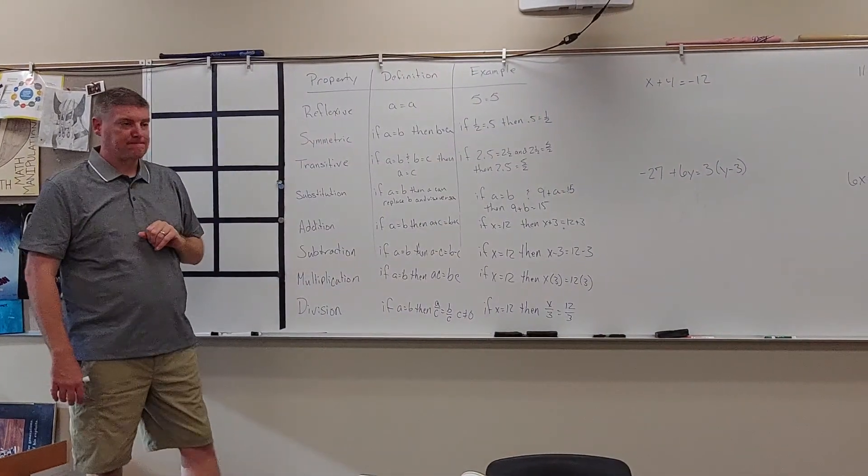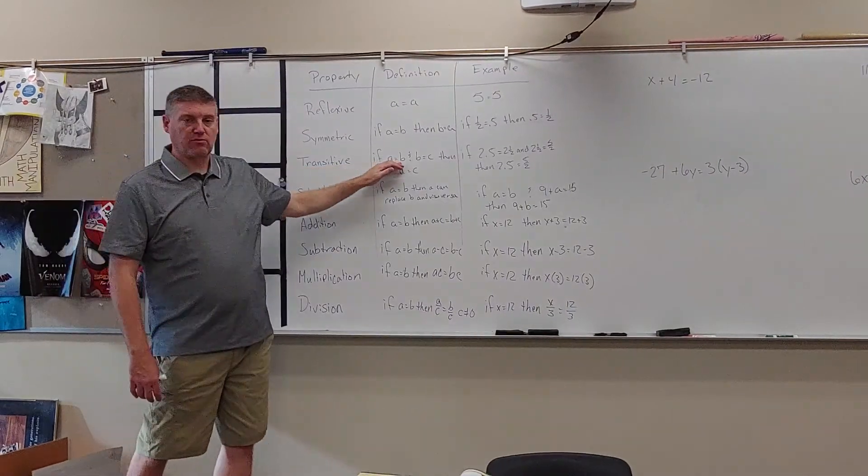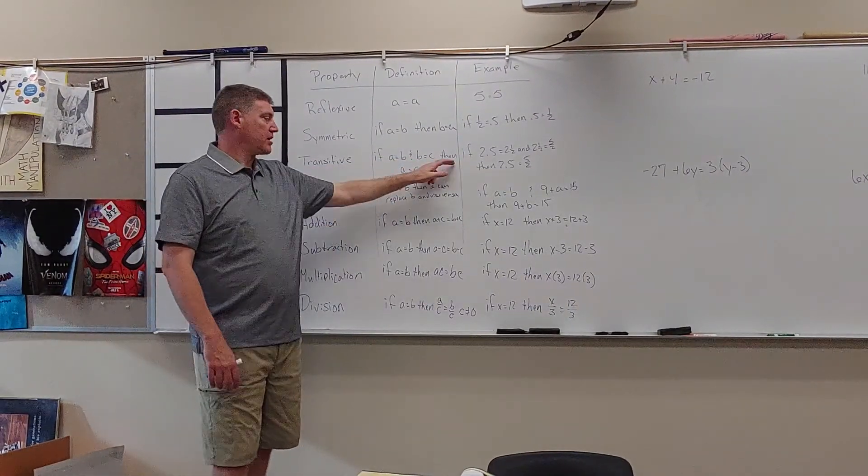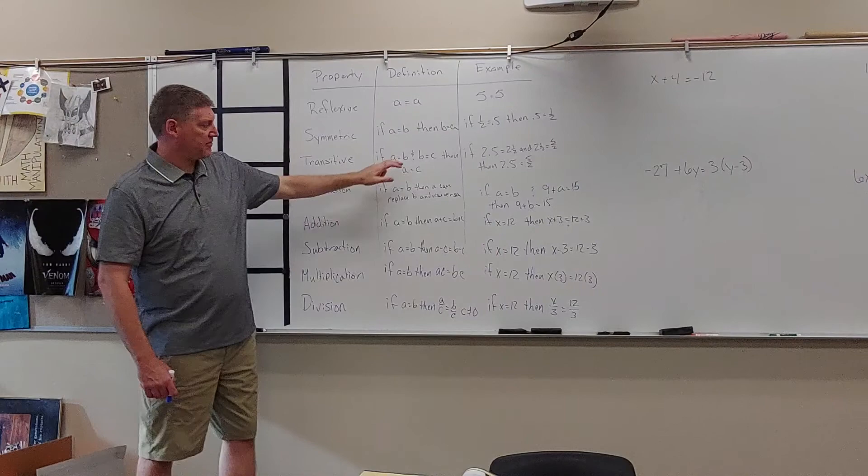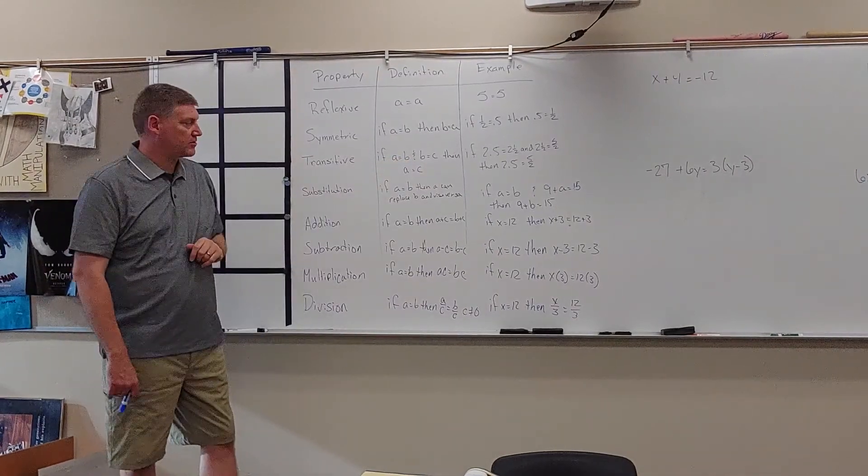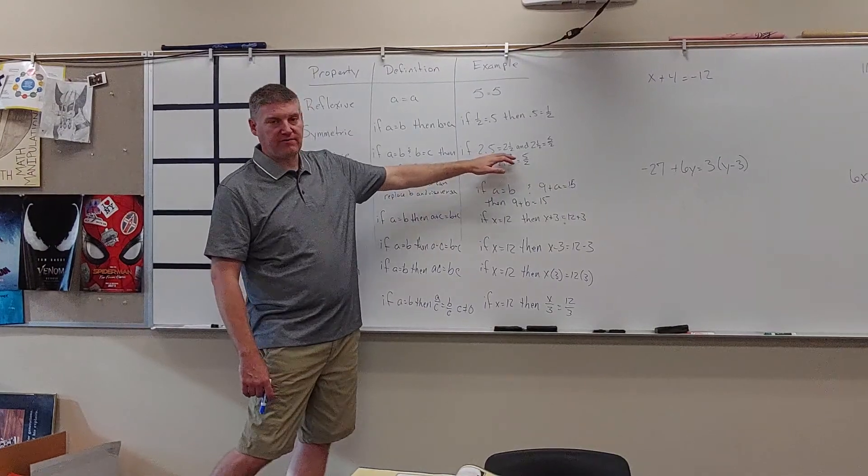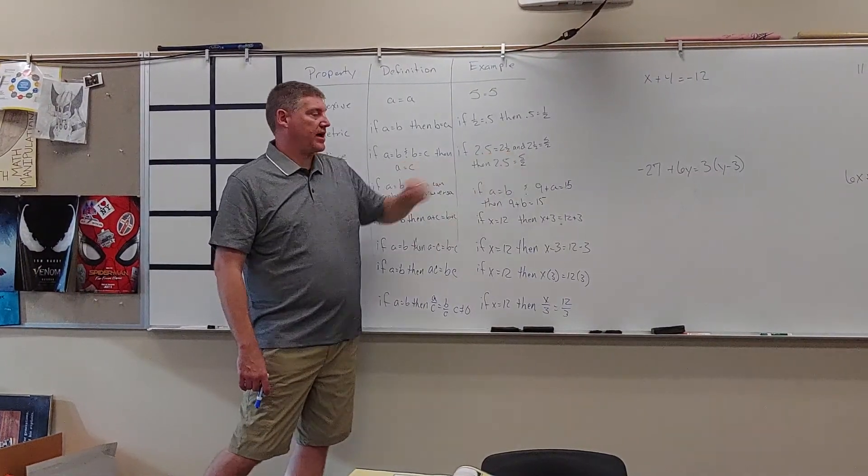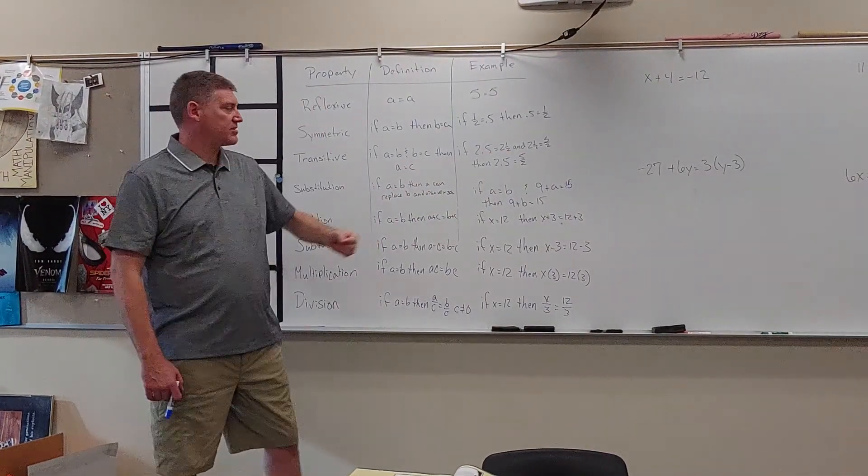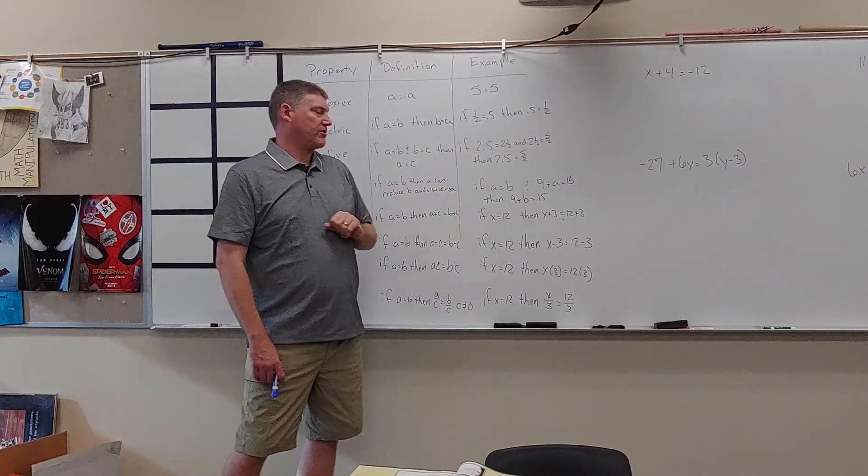Transitive property. If A equals B and B equals C, then A equals C. It's kind of cutting out that middleman. So if 2.5 equals 2 and a half and 2 and a half equals 5 halves, then 2.5 equals 5 halves.